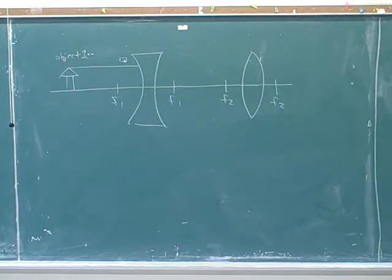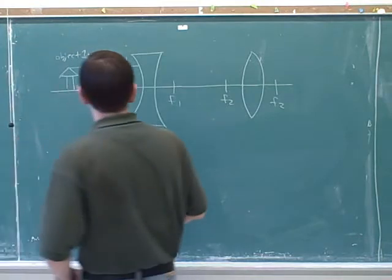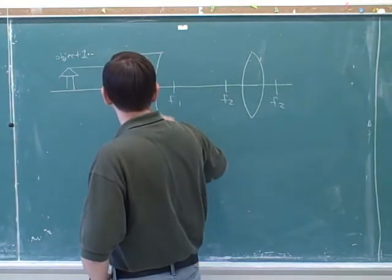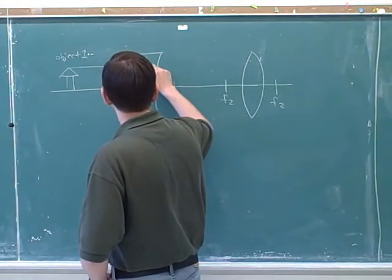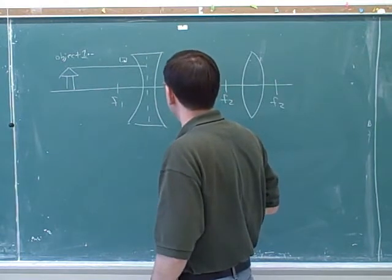What's that called? Traceback. Traceback — that's what we're calling it. To go back to this focal point. So we know that when the ray comes in parallel to the axis, either it or its traceback goes to the focal point.